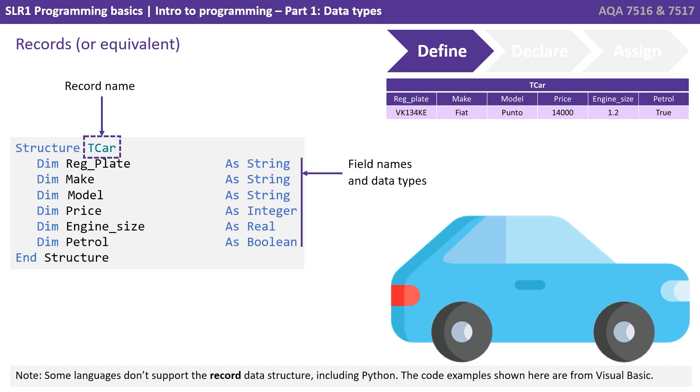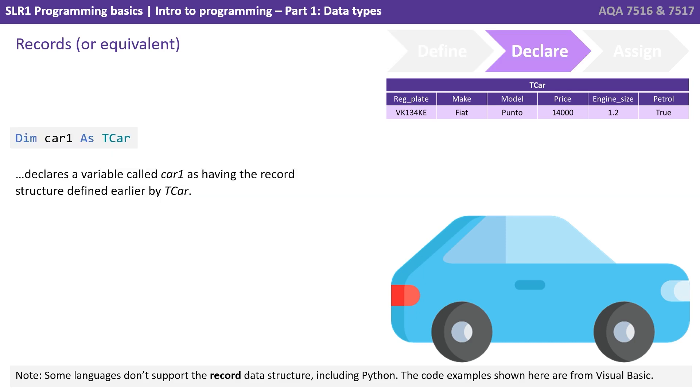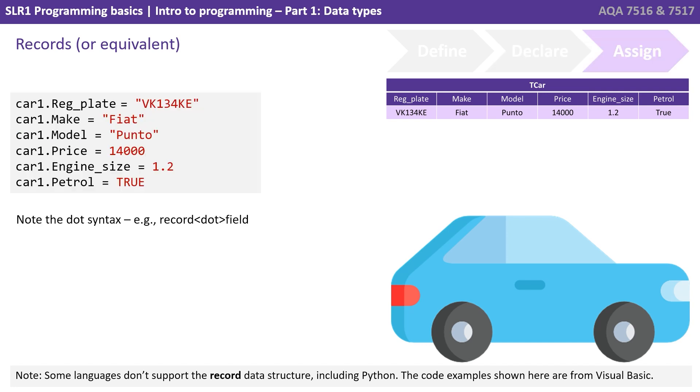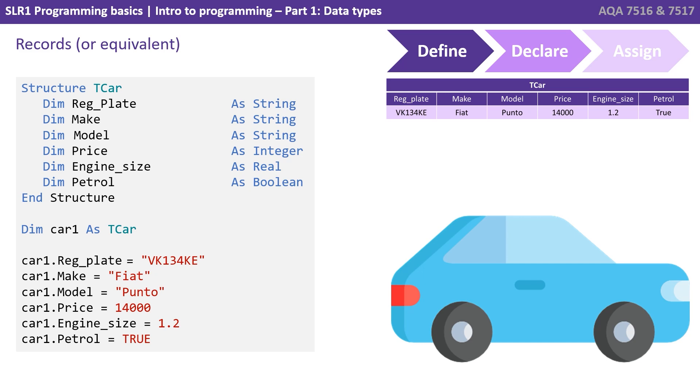Now we can declare instances of our new record type. So here in VB, I'm declaring a variable called car1 as having the record structure defined earlier by T-car. And now we actually have a declared instance of our T-car record. We can now assign variables to it. So note here the dot syntax, and this is quite common. So we're saying car1 dot regplate equals. We're assigning a value to that particular component or variable within our car1 instance of the T-car record structure. There's a summary of what the code would look like in total. So at the top there, we define the record structure. Then we declare an instance of our T-car structure. And then finally, we make use of it.